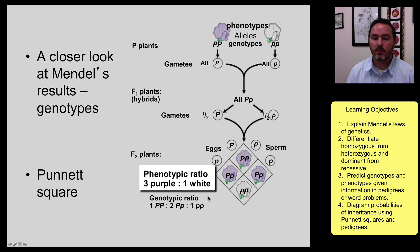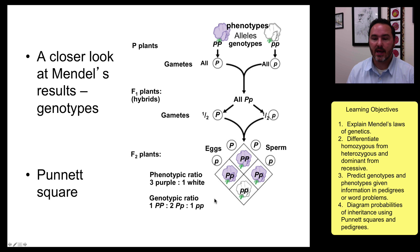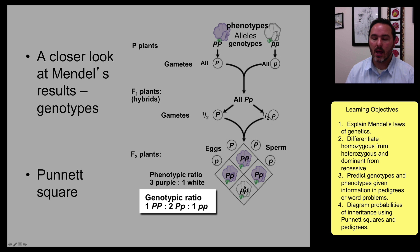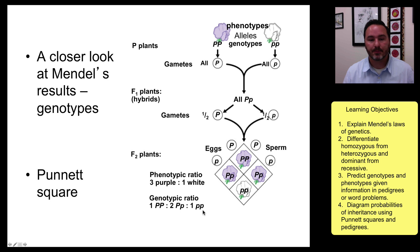If you look at the genotypes — the actual letters — then it is a one to two to one genotypic ratio: one big P, big P, to two big P, little P's, to one little P, little P ratio.